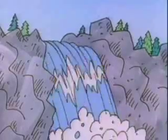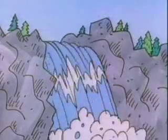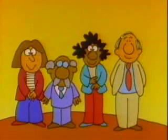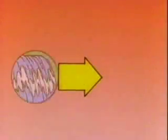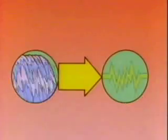Some cities and towns use the energy that's in falling water. But they can't use the falling water's energy directly. They have to use appliances of some kind to change that energy into some other form of energy that the people of the city or town can use, like electricity.